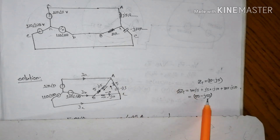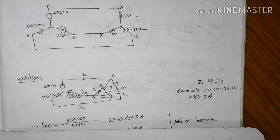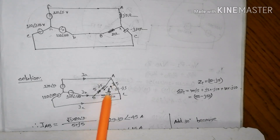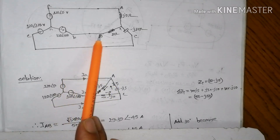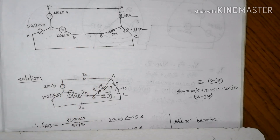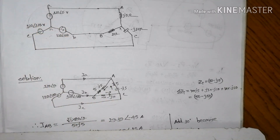The figure shows a delta-connected load. The current and phasor current are connected. After calling for phases AB and BC, we have phasor currents for the ABC phase sequence.